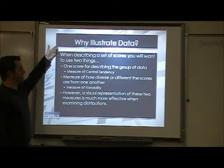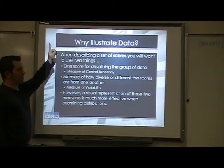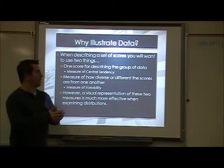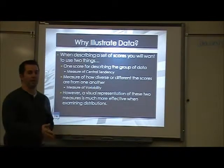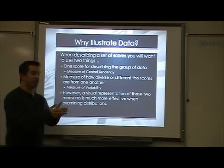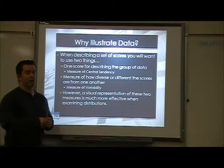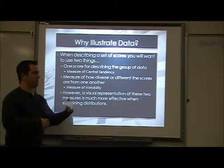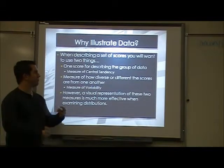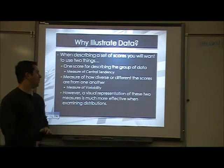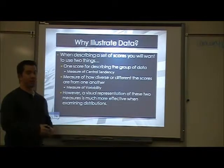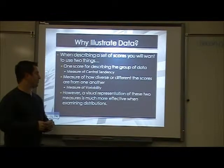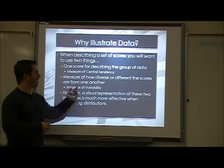When describing a set of scores, you'll want to use two things. One, you're going to want to know what the middle of that data is — your measure of central tendency. Where is your mean? Where is your median? Where is your mode? The other one is measures of variability — how spread out are the things. Those are the two things you want to know.